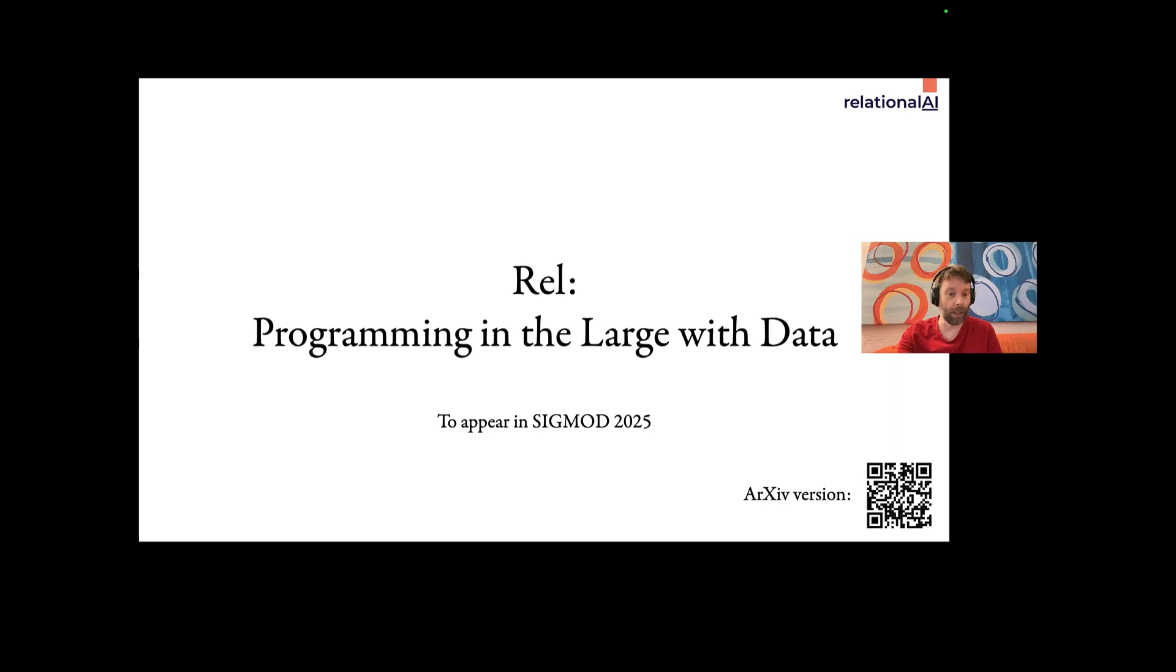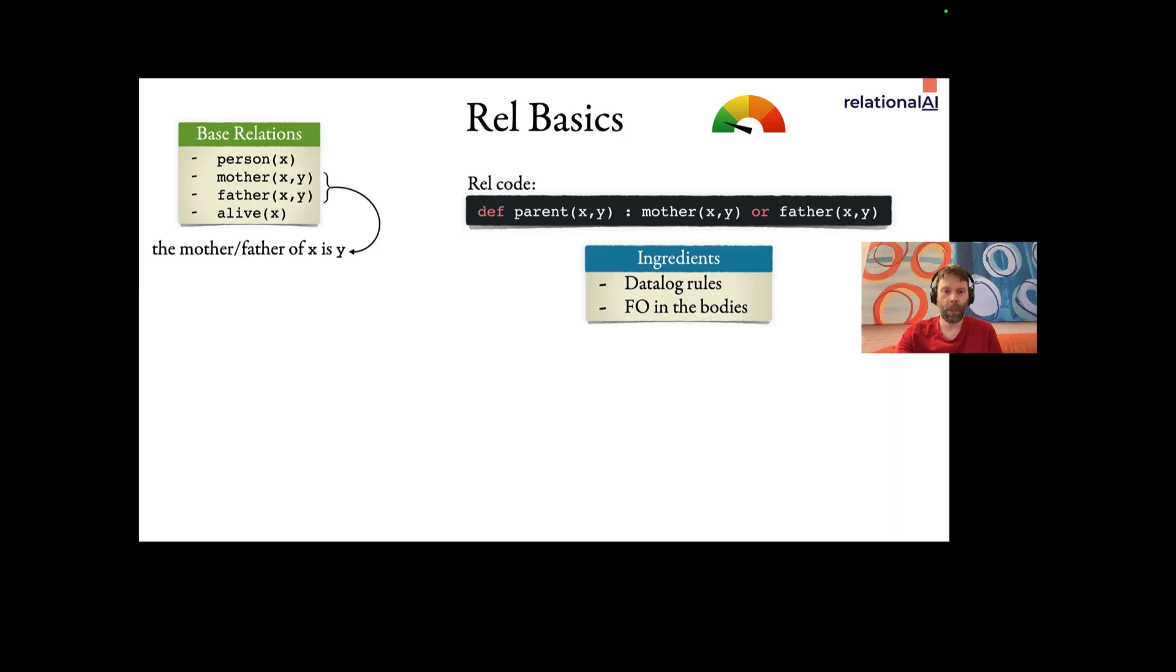So we came up with a language, rel, short for relation, and it's going to be presented at this year's SIGMOD. The starting point for rel is that you have Datalog rules with first order logic in the bodies. So you can define the parent relation based on mother and father, like in this piece of rel code. This rule says that if somebody is a mother or a father, then they are also a parent.